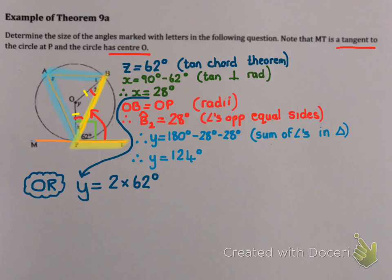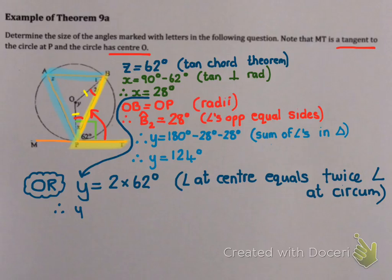And it would be twice the angle at the circumference if it's made by the same points. Now I can see that Z is made by P and B. And so is Y. So the angle at the center will be twice the angle at circumference. Which means Y is also 124 for that reason.